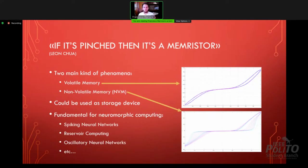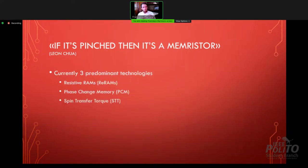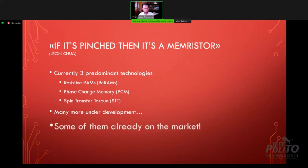Now let's go more into something more realistic. There are three technologies which are predominant at the moment: resistive RAMs, phase change memory, and spin transfer torque. And there are also many others that I had not enough space or time to cite, but there are also many others under development. Some of them are even on the market right now, and I'll show you one in a little bit.